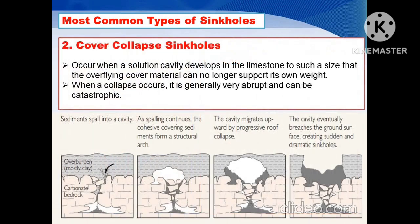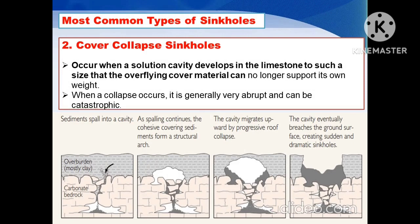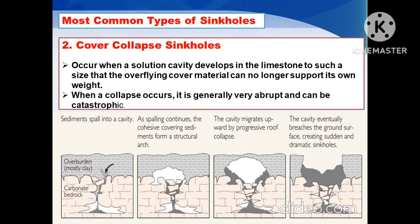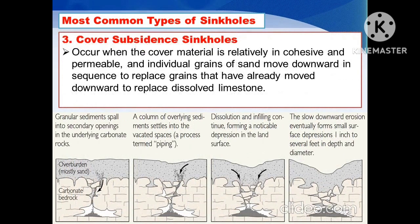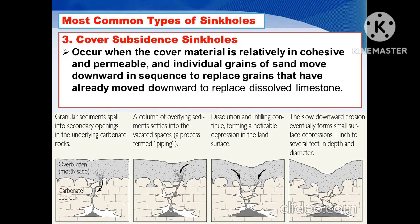Cover collapse sinkholes occur when a solution cavity develops in the limestone to such a size that the overlying cover material can no longer support its own weight. When a collapse occurs, it is generally very abrupt and can be catastrophic. Cover subsidence sinkholes occur when the cover material is relatively incohesive and permeable. Individual grains of sand move downward in sequence to replace grains that have already moved downward to replace dissolved limestone.